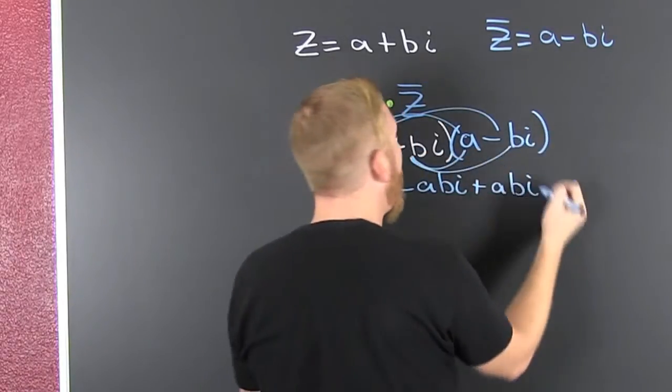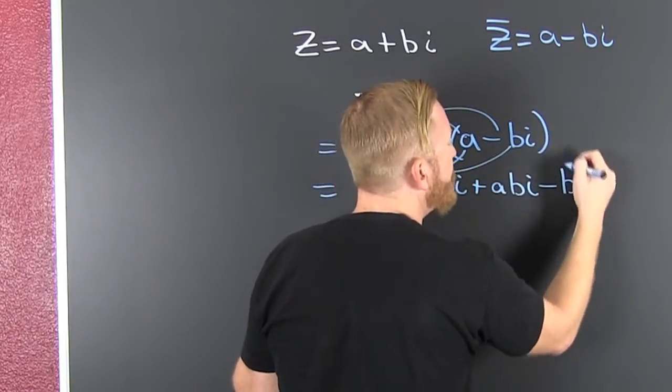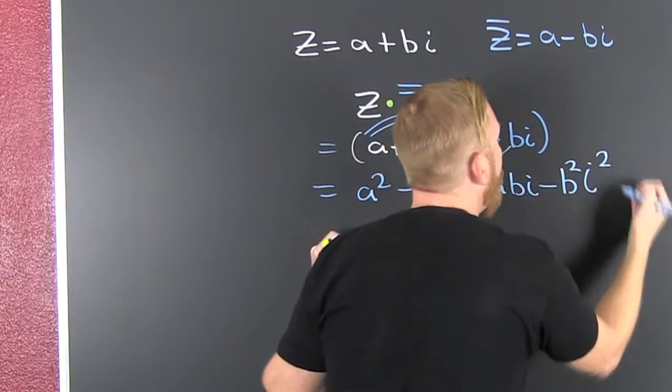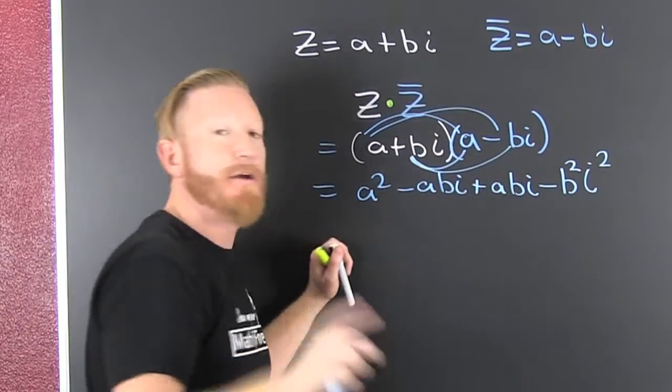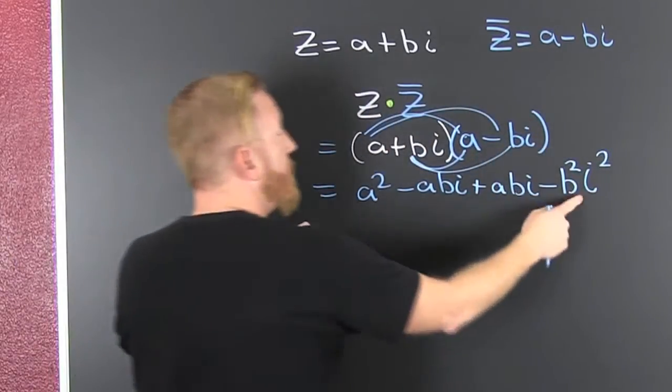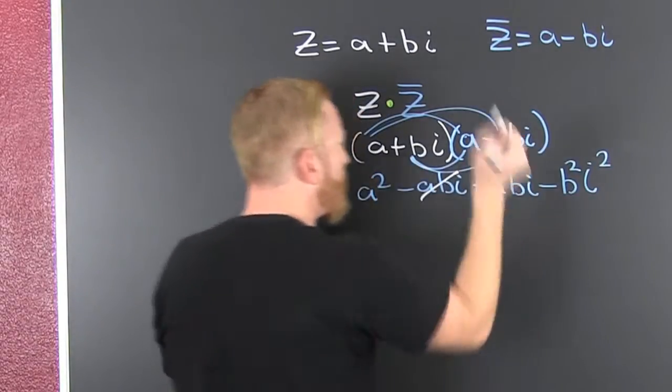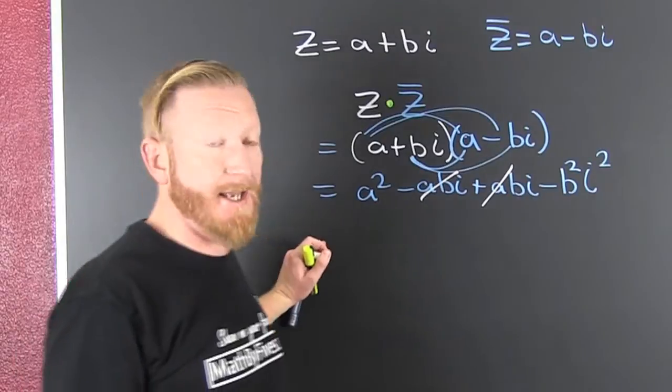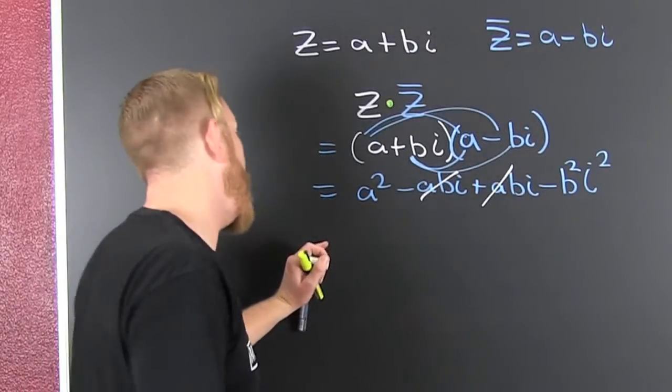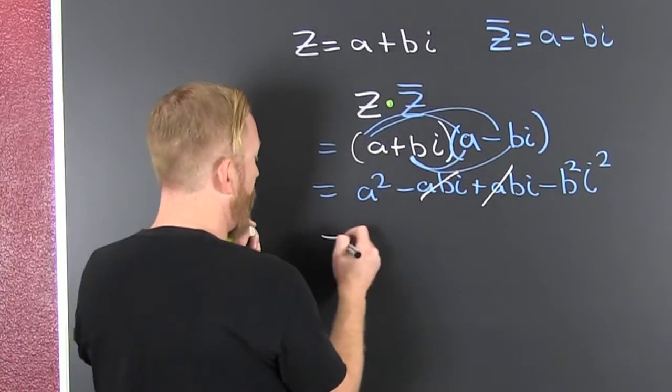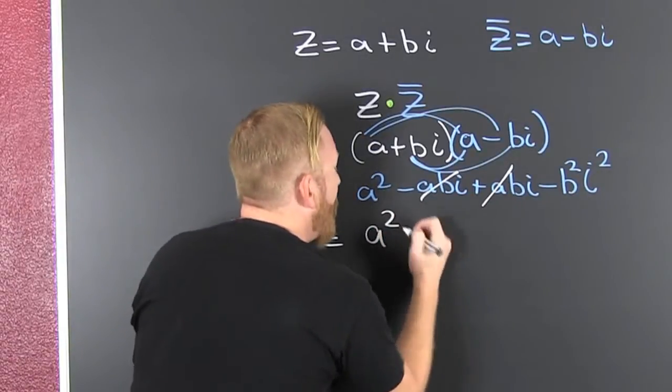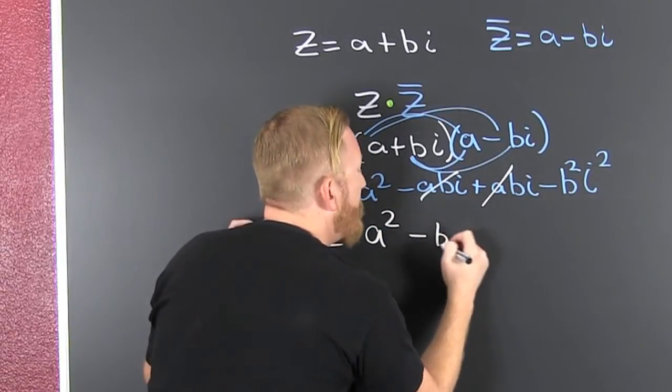And then finally our last, that's minus b squared i squared. Before we evaluate it to minus one, we see there's some cancellation. If I took a plus bi and subtract a minus bi, I'd have no abi minus abi. So I am left with a squared minus b squared times i.